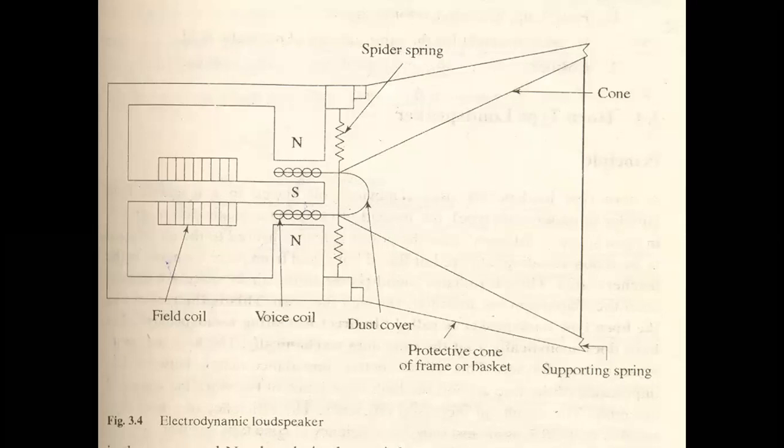Structure में spider spring है और spider spring से voice coil भी connected है। पूरा cone shape बना है, उसके ऊपर एक dust cover लगाया है और supporting springs लगाये हैं। Core पर एक large field coil लिपटी हुई है जो एक बहुत steady magnetic field produce करती है। Magnet का shape pot type होगा जिसका south pole center में और north pole peripheral पर है। इस core के special shape की वजह से magnetic flux poles pieces की बीच annular gap में concentrated रहता है। Voice coil को fiber या aluminium पर wrap करते हैं और annular gap के अंदर रखते हैं।